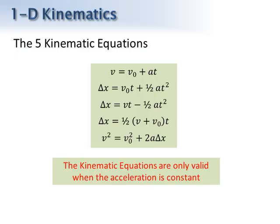If you look closely at the variables in the five equations, you'll notice that each one is missing one of the five variables. The first one is missing delta x, the second is missing final velocity, and so on. This is why I like to use five kinematic equations — it makes for a very clean and logical set. When solving a problem, just determine which variable is not involved, and that tells you which equation to use.